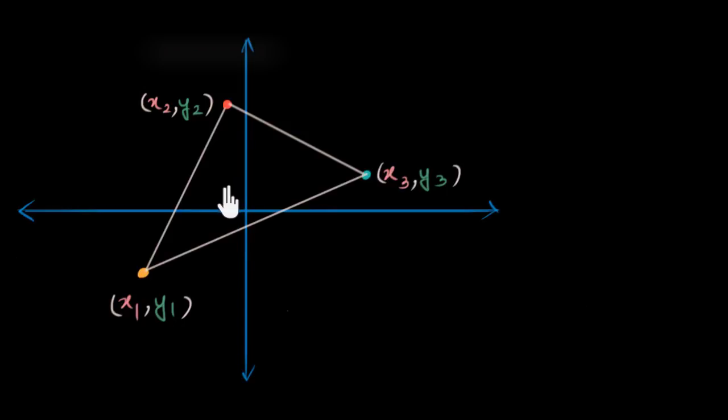So then you can think okay maybe you can find the lengths of each of these sides. That was the second thing that struck me. Maybe I can find this length this length and this length and then use Heron's formula.